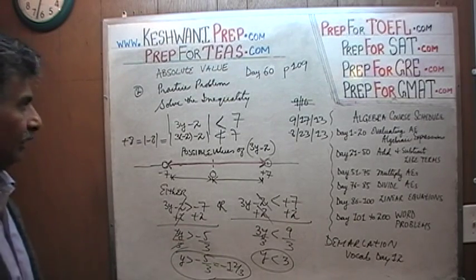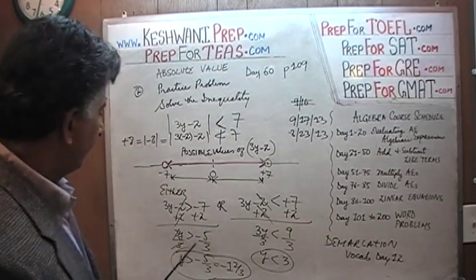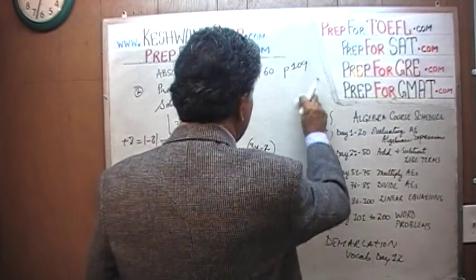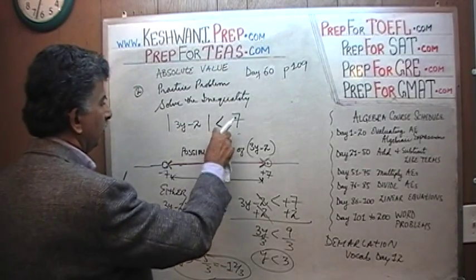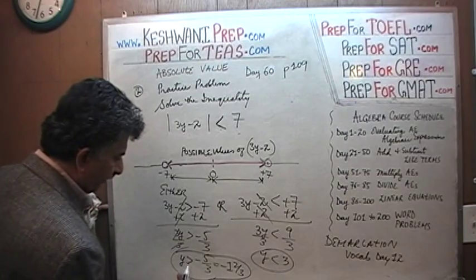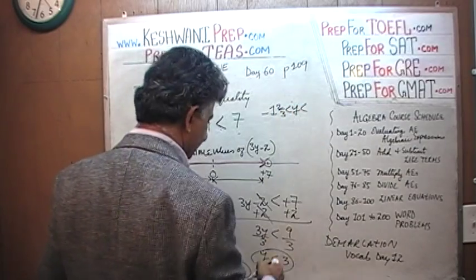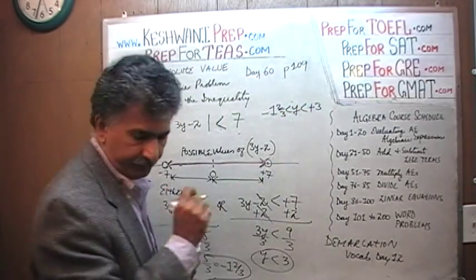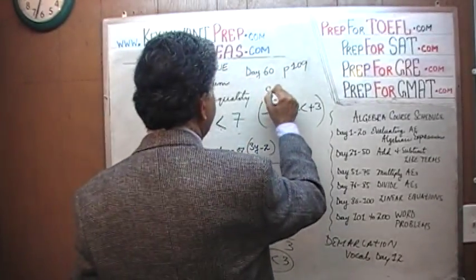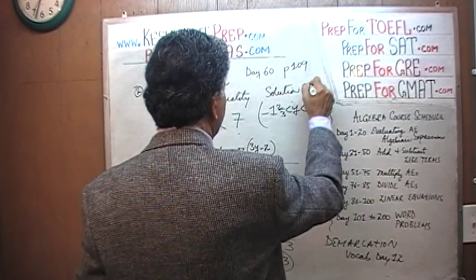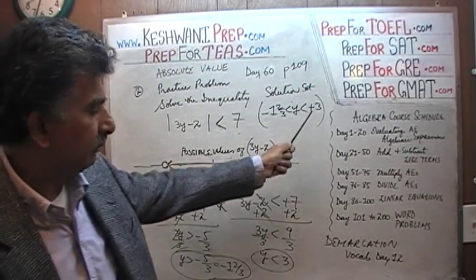So our solution set is all the way from negative five-thirds to 3. Our solution set is: y is between negative 1 and two-thirds and positive 3 — that is, y is greater than −1⅔ and less than 3. There you go — negative 1 and two-thirds and positive 3. That is our solution set.